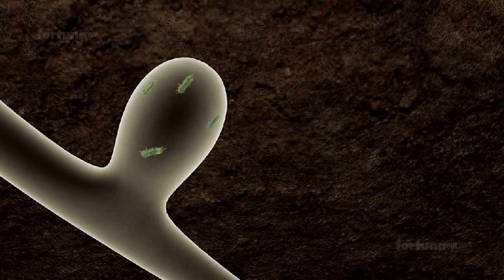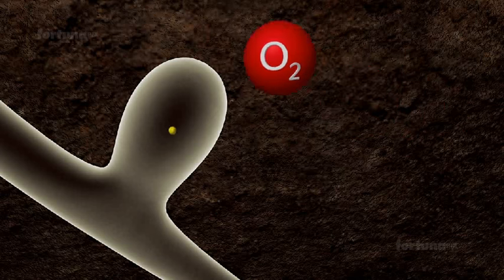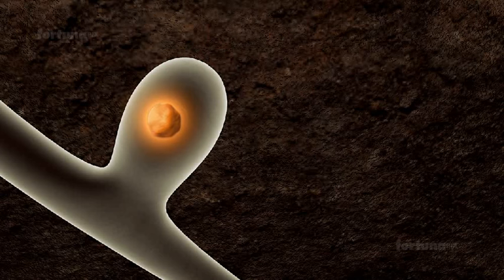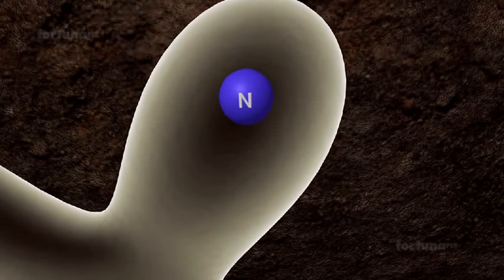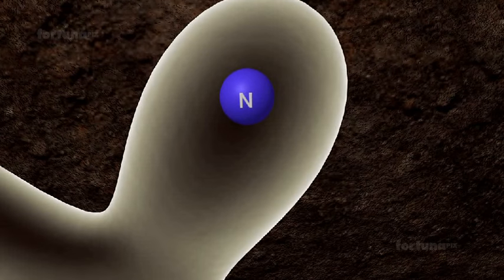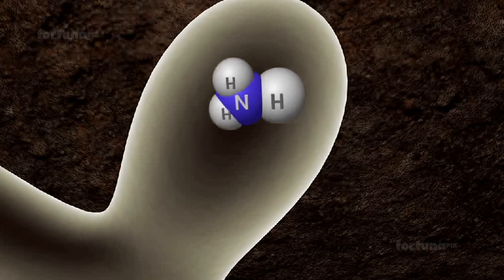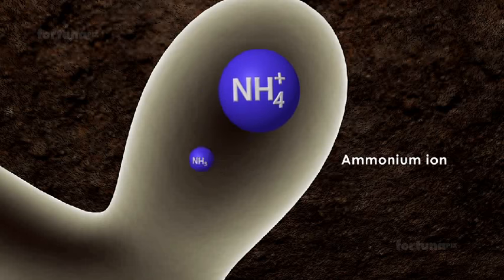Once atmospheric air reaches the root nodule, oxygen will combine with the leg hemoglobin. Leg hemoglobin combines with oxygen, thereby promoting nitrogenase activity. The nitrogen molecules, with the help of nitrogenase, will combine with hydrogen molecules to first form ammonia and then an ammonium ion.